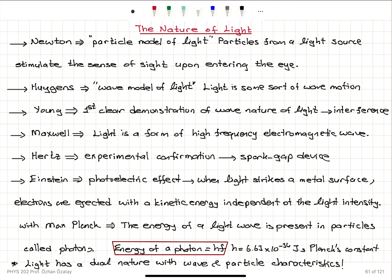To summarize: there are scientists who argue light is a collection of particles, and others who argue light has a wave character. Newton's particle model suggests the light source produces particles that hit the eye and stimulate the sense of sight. Huygens' wave model suggests light is some sort of wave motion, and Huygens' principle explains how light behaves when passing through a narrow slit. Young has the first clear demonstration of the wave nature of light using the double slit interference experiment.